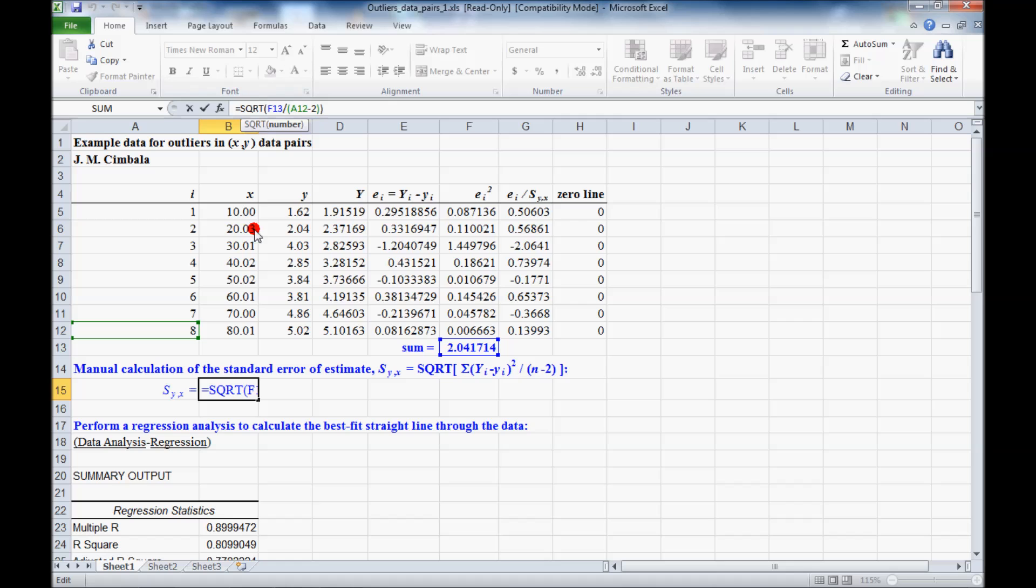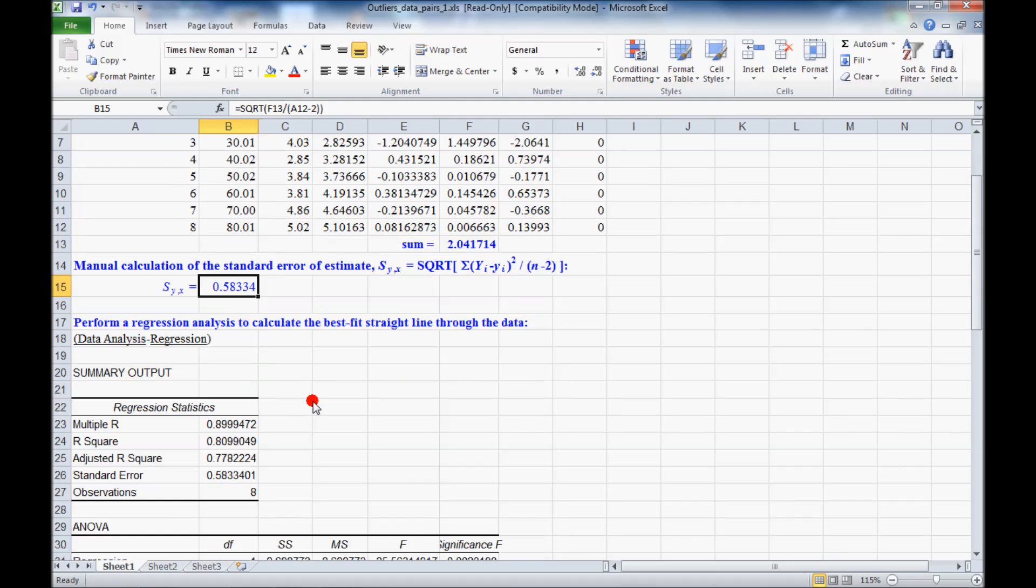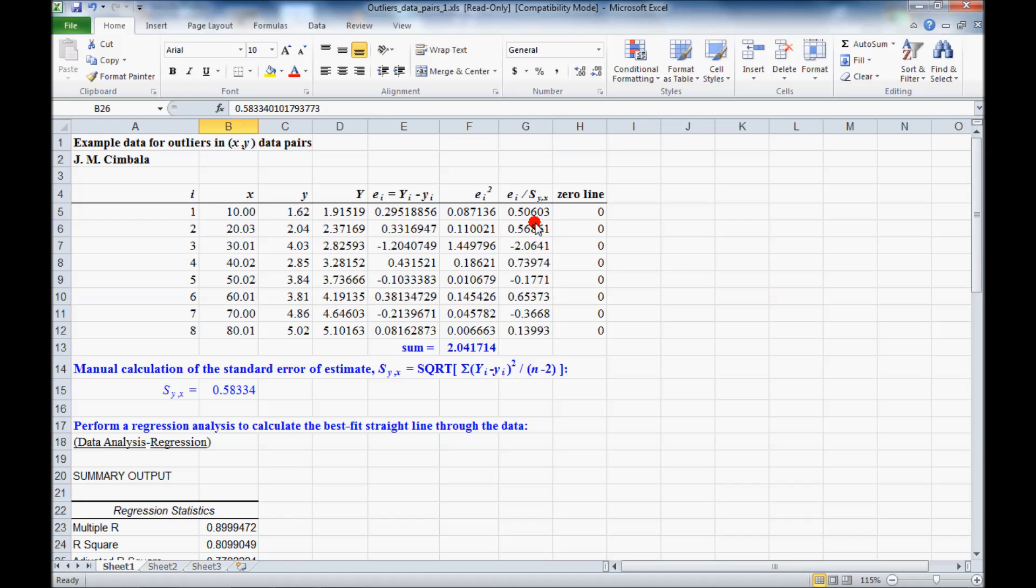N is 8. And so I get the value of S_Y,X. But notice that's also the same value as Excel calculates for us in its macro standard error, 0.5833. So it actually calculates that for you. So this step was not necessary. I just did it to show you that it works. Finally, here we have this normalized residual, which is E_i divided by S, S of Y, X.